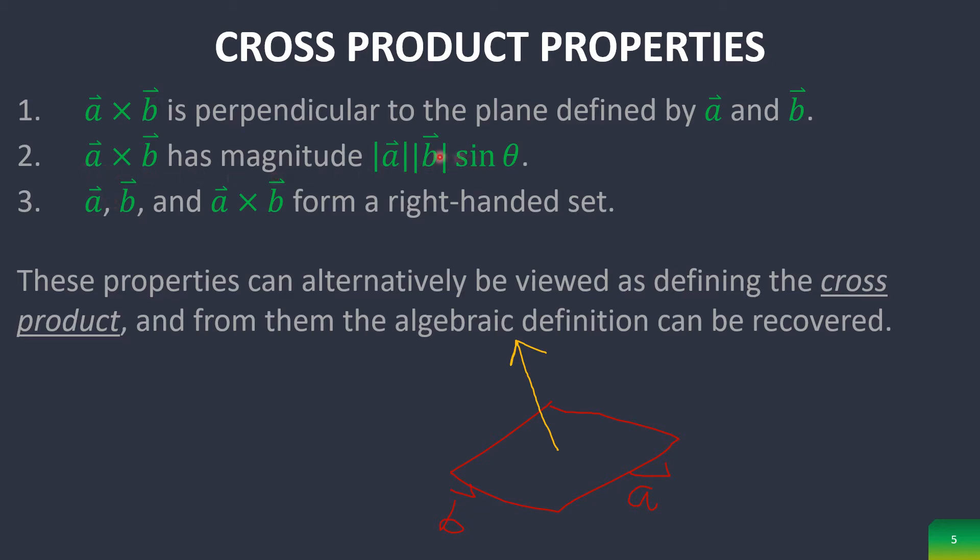There's also a way you can visualize this, which is A cross B has this magnitude right here, which if you actually think about it, that's just the area of the vectors that they form. Very similar to what we discussed in section 1.3 on complex numbers. And basically, they form a right-handed set that will be talked about more in the next section.